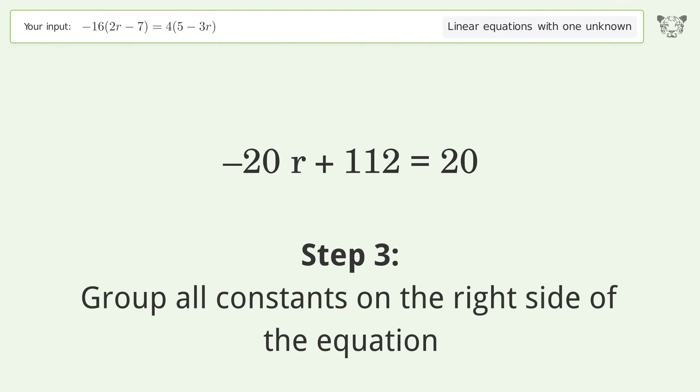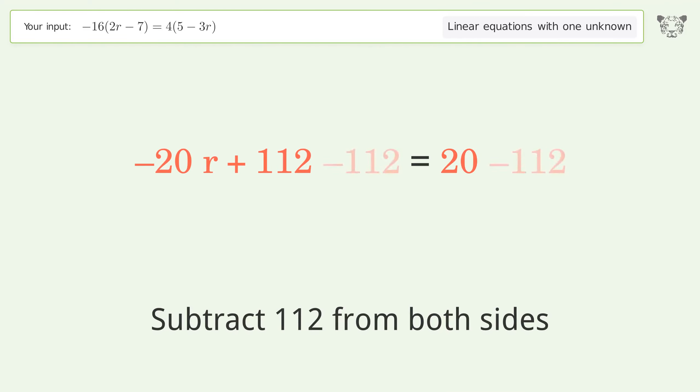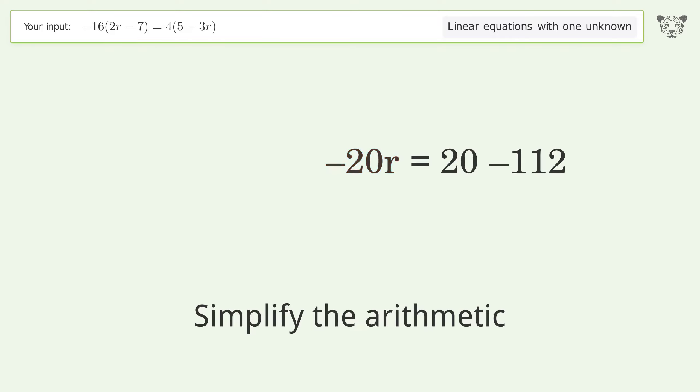Group all constants on the right side of the equation. Subtract 112 from both sides. Simplify the arithmetic and group like terms.